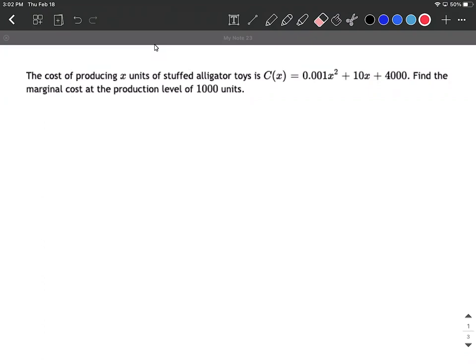Marginal cost means the cost for producing the next unit. So the thousand and first unit is going to cost how many dollars? For our purposes, we can think of marginal cost as meaning the same thing as the derivative.